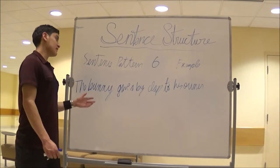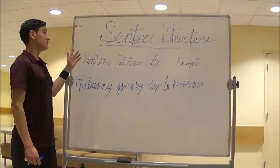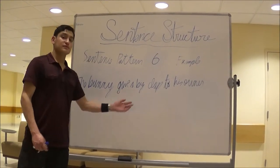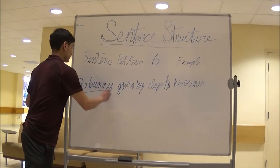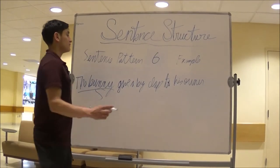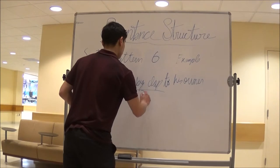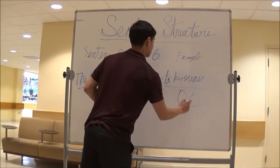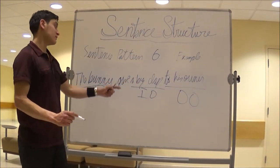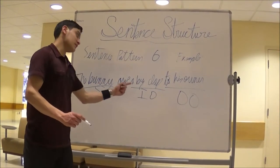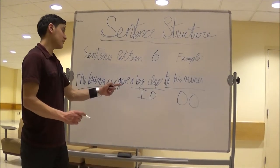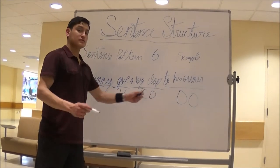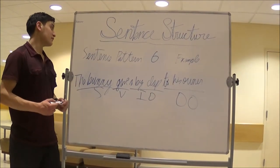Sentence pattern 6. Example with a transitive verb and indirect object: the bunny gave a big clap to his owner. To his owner is the direct object — it is receiving a big clap. The indirect object will always be between the verb and the direct object. That makes this pattern 6.